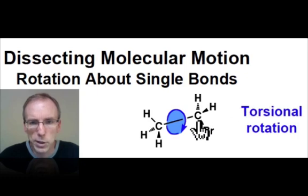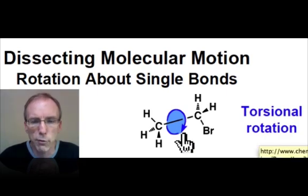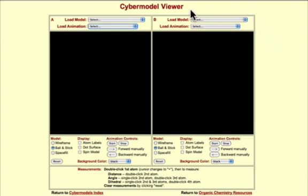When the groups of atoms on either side of a single bond rotate relative to one another, the process is known as torsional rotation. A very nice animation of this process can be found on the Cyber Model Viewer. Once you're in Cyber Model Viewer, load the animation for ethane bond rotation.